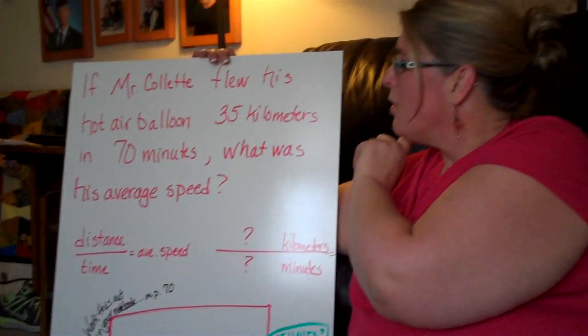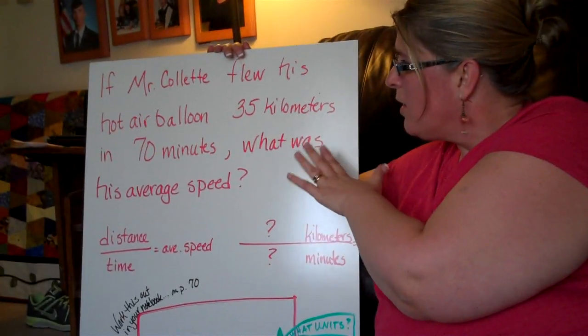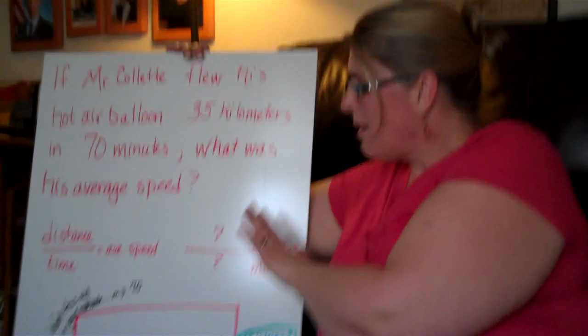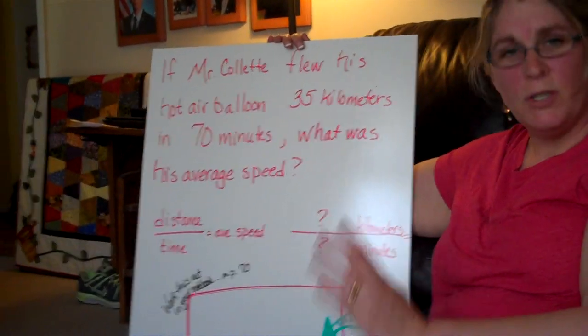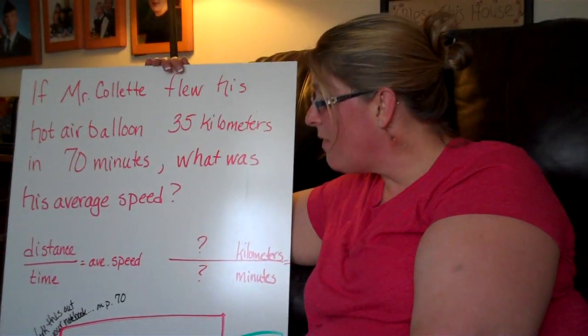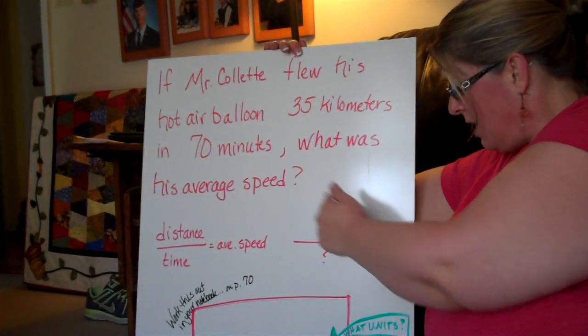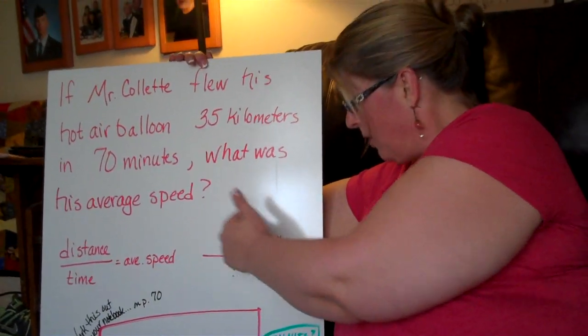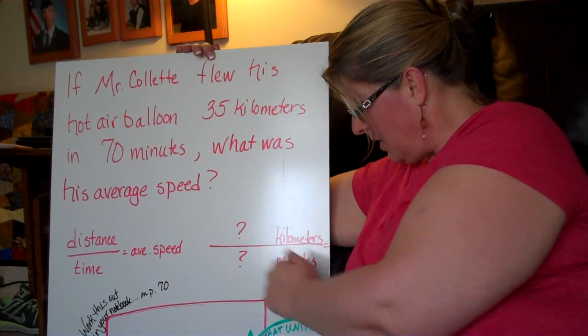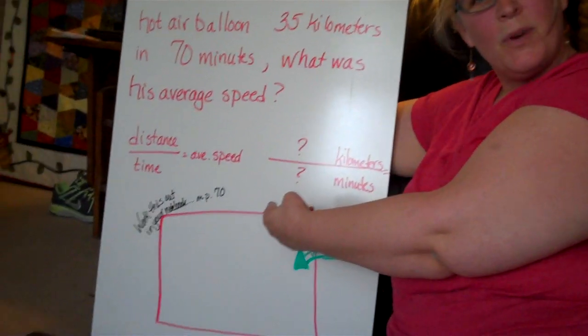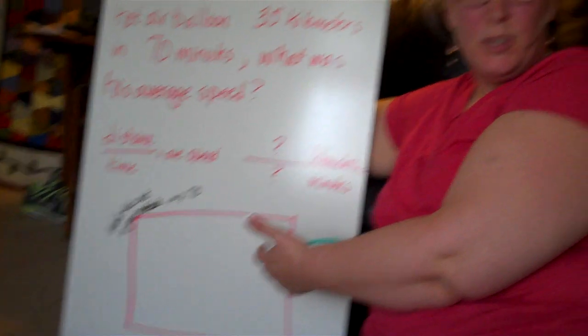So here's your question. He flew his hot air balloon 35 kilometers in 70 minutes. What was his average speed? First, I want you to write down the formula: distance divided by time equals average speed. Then pull out the numbers and the units. So whatever it is kilometers divided by whatever it is minutes. And in your notebook, I want you to work out this problem.